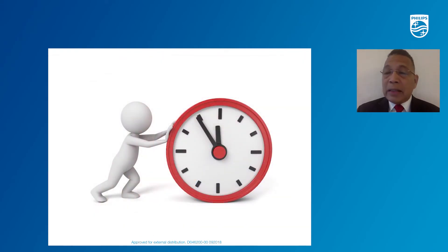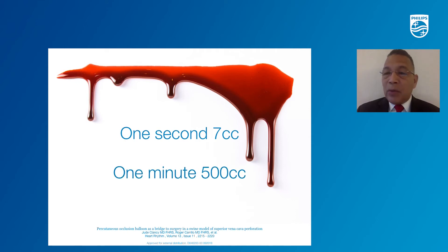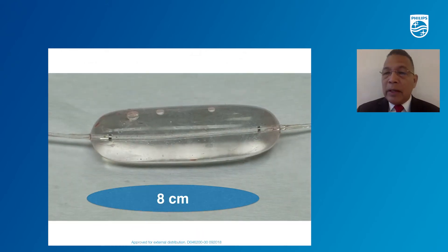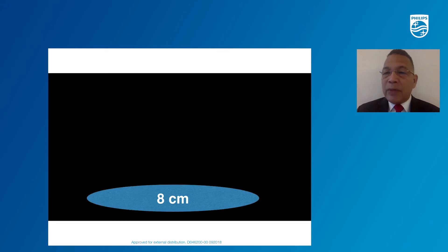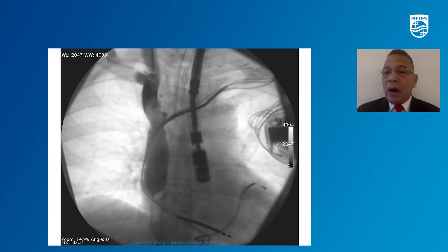When we have these injuries, time is of essence. Every second, we lose seven cc's of blood. Every minute, we lose 500 cc's of blood. And in five minutes, we will have lost 2.5 liters of blood. The endovascular balloon, specifically designed for superior vena cava application, is an eight-centimeter pliable balloon that efficiently occludes blood coming from the upper part of the body, as you can see in this venogram.